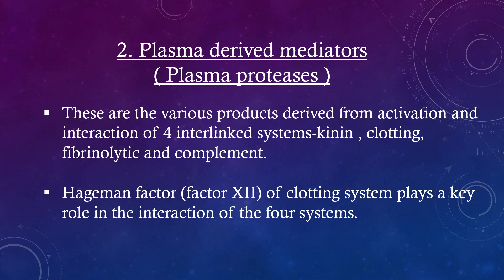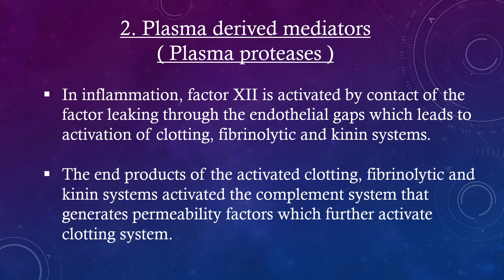Plasma-derived mediators — plasma proteases. These are various products derived from the activation and interaction of four interlinked systems: kinin, clotting, fibrinolytic, and complement. Hageman factor (factor XII of the clotting system) plays a key role in the interaction of these four systems. In inflammation, factor XII is activated by contact with the leaking endothelial gaps, which leads to activation of the clotting, fibrinolytic, and kinin systems. The end products of these activated systems further activate the complement system, which generates permeability factors that further activate the clotting system.